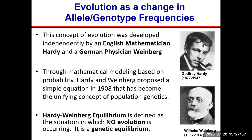Hardy-Weinberg equilibrium is defined as a state of balance where there is no evolution occurring — a stage of genetic equilibrium. It's like an ideal world where nothing is changing: no gene change, no mutation is occurring. Hardy and Weinberg defined this with their mathematical equation.